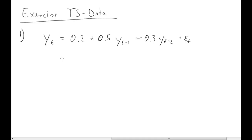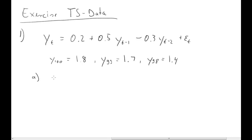We also know a few observations: the observation at time period 100 was 1.8, at time period 99 was 1.7, and at 98 the observation was 1.4. The question is: what is the expected value one period ahead at period 100, given information at time period 100? We also want the two-step ahead forecast. But let's start with this one.